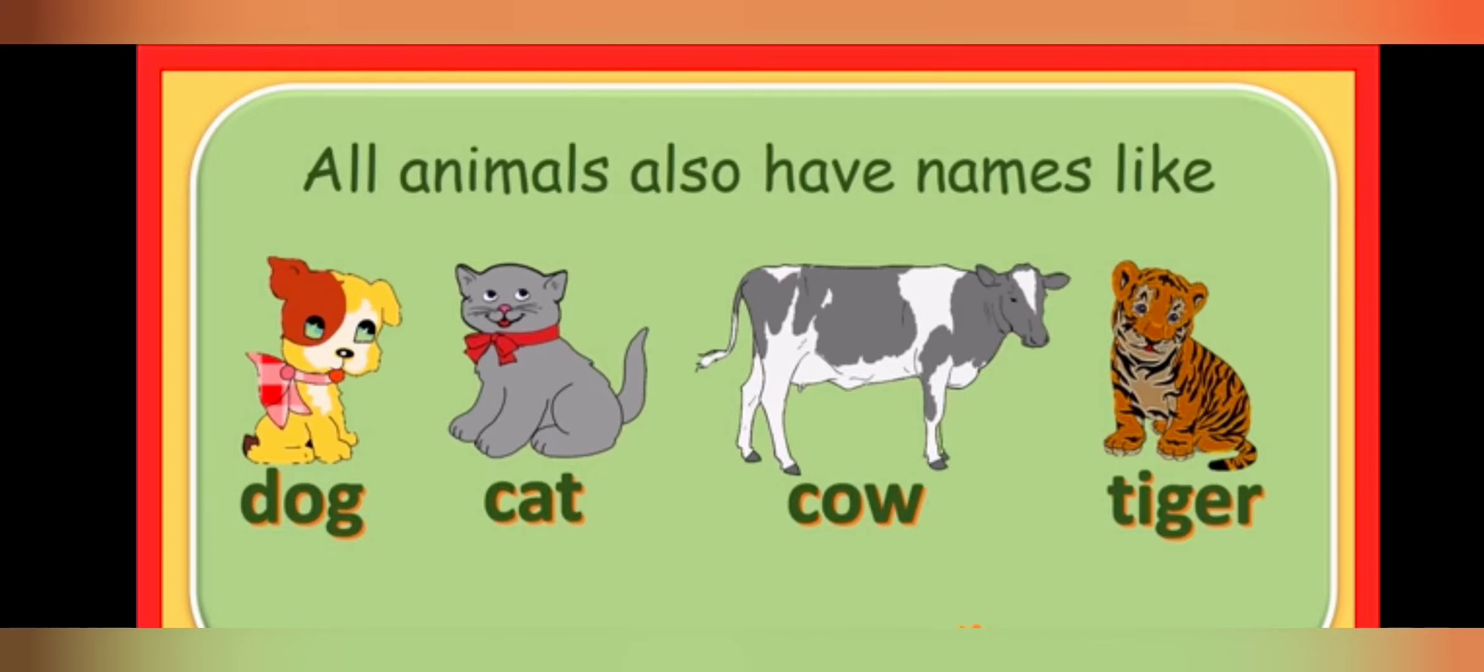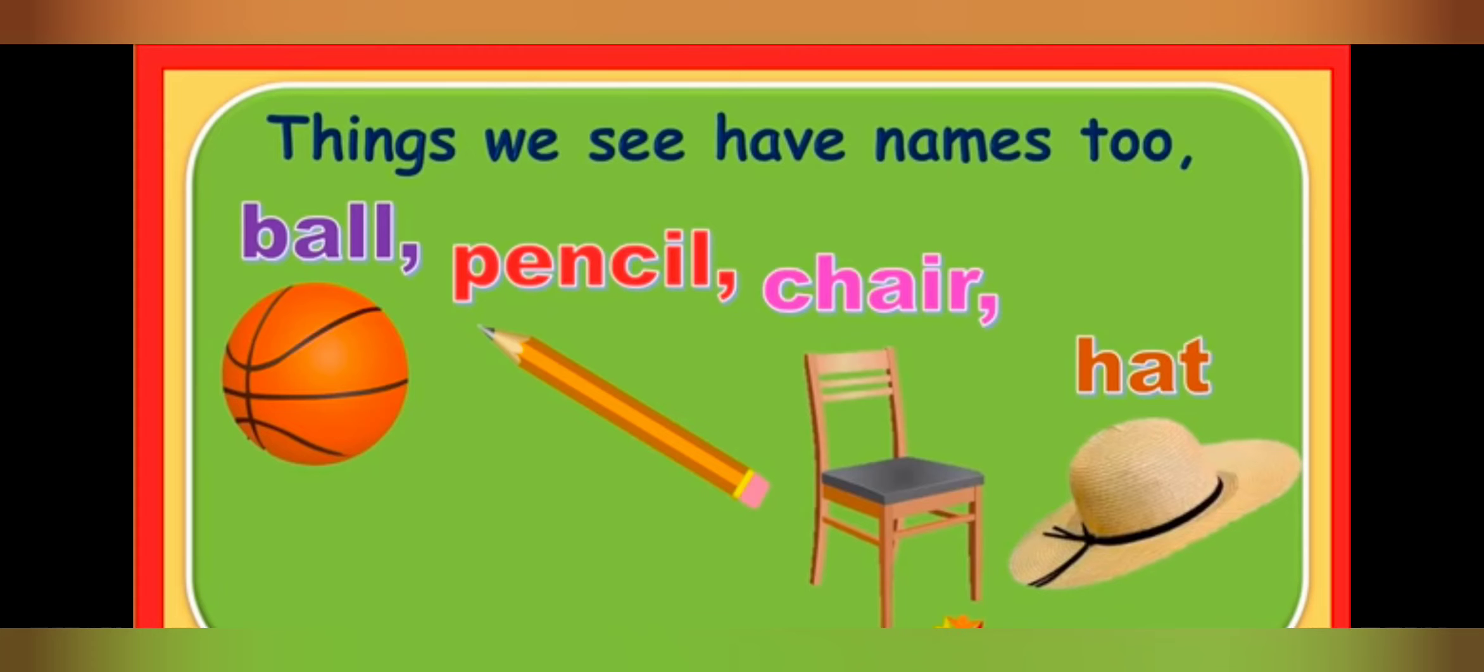Students, now, as you can see on the screen, different things are there. And yes, things also have names. Now, let us see. In the first picture, we can see a ball. And does it have a name? Yes. This thing is called a ball.